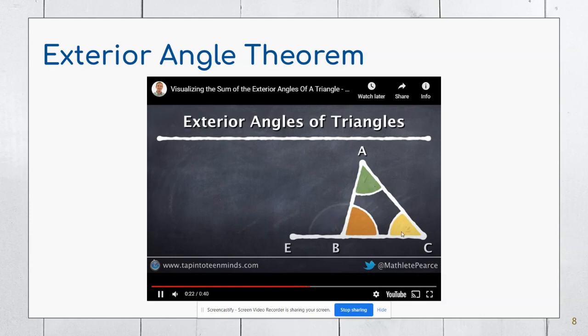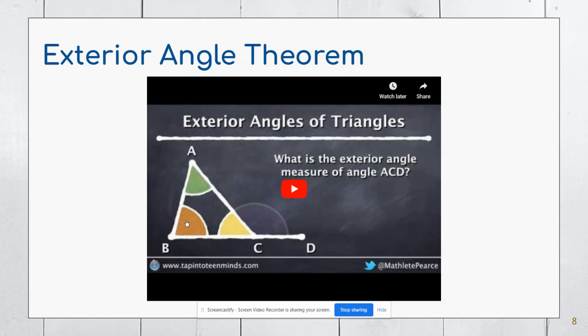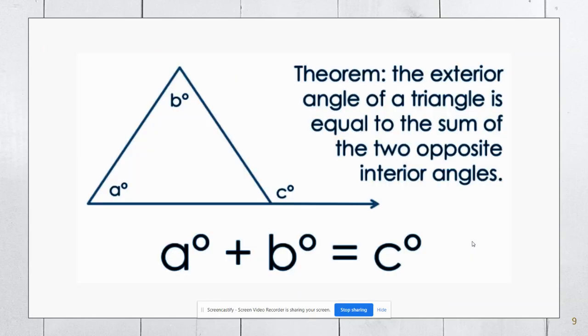If A, B, and C make 180 degrees, or in this case now X, Y, and Z, these two have to be 180 degrees added together. These three have to be 180 degrees added together. So that tells me that these two angles here have to add together to make this angle outside. These two opposite interior angles are going to add up to make that exterior angle.